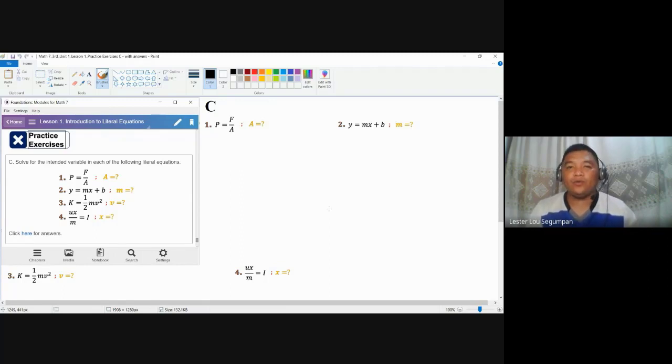You might want to review the other videos as part of preparation. So number one, this is the formula for pressure: P equals F over A. But here we are going to solve for area. How do we solve for A here? Take note that our expression is already here as a quotient, not a product of F and A.